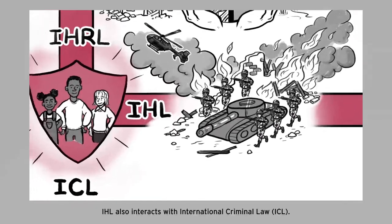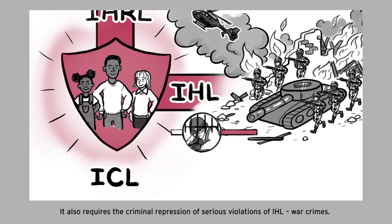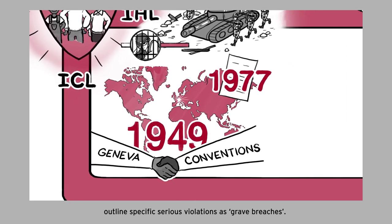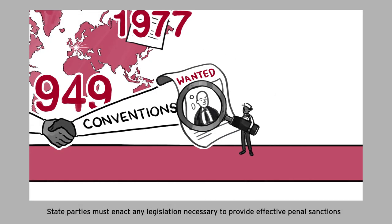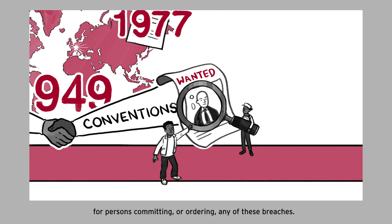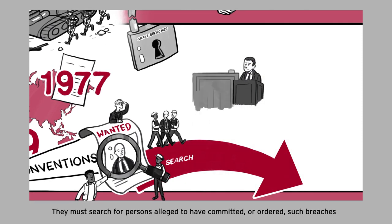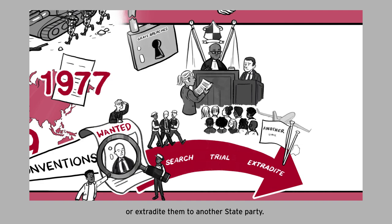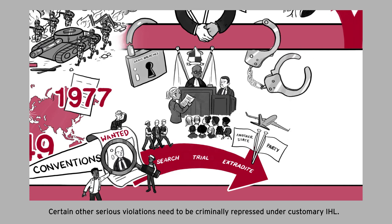IHL also interacts with International Criminal Law. IHL regulates armed conflicts and requires the criminal repression of serious violations — war crimes. The 1949 Geneva Conventions and Additional Protocol 1 outline specific serious violations as grave breaches. State parties must enact legislation to provide effective penal sanctions for persons committing or ordering such breaches, search for alleged offenders and bring them before their own courts regardless of nationality, or extradite them to another state party. Certain other serious violations must also be criminally repressed under customary IHL.